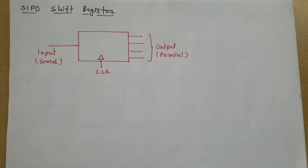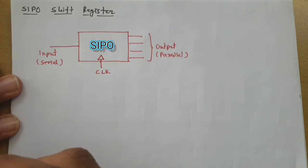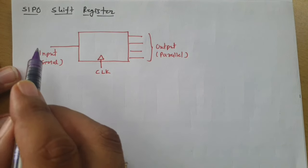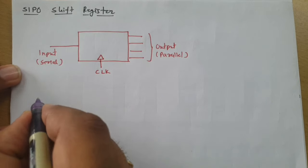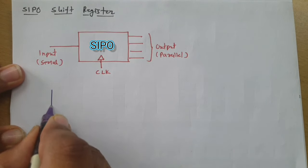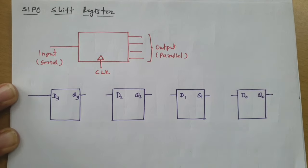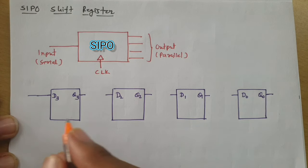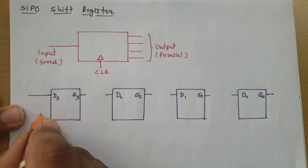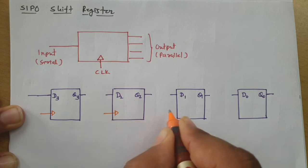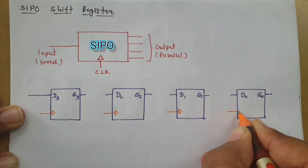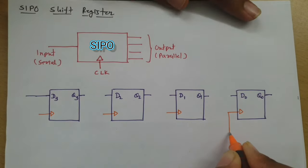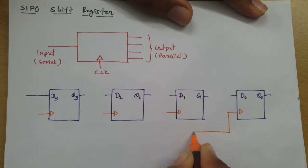Now let us understand this Serial Input Parallel Output circuit using 4 D flip-flops. We draw 4 D flip-flops and connect a common positive-edge-triggered clock to all four flip-flops.